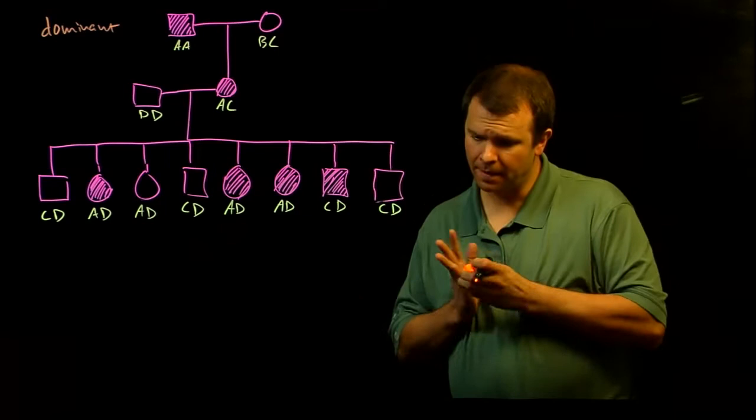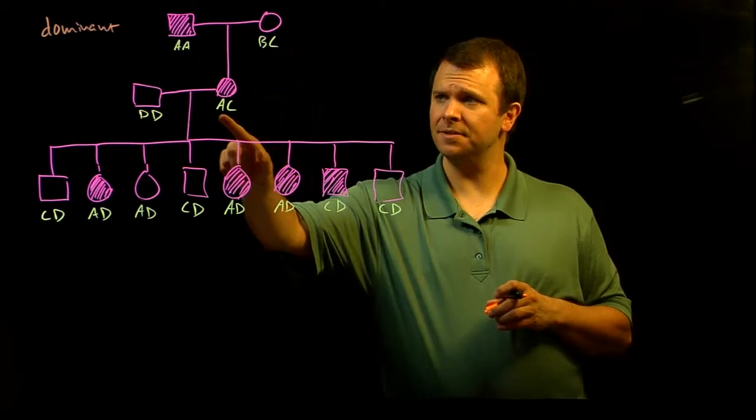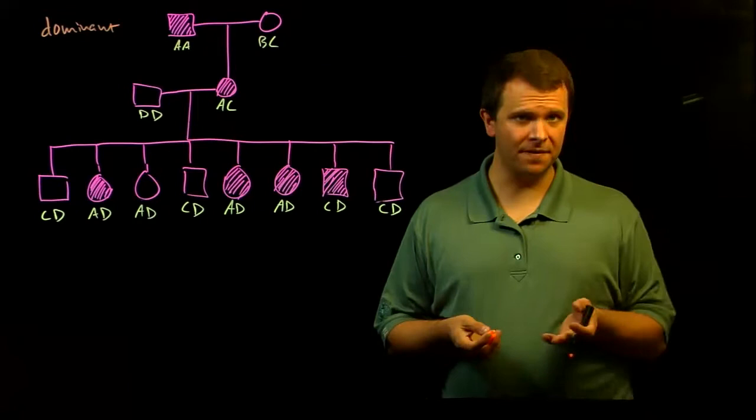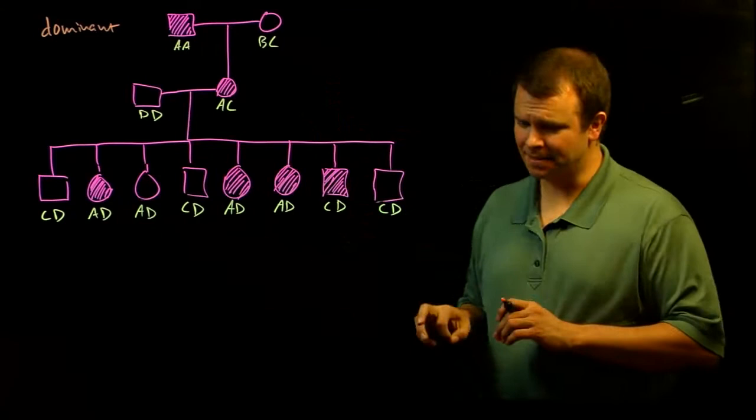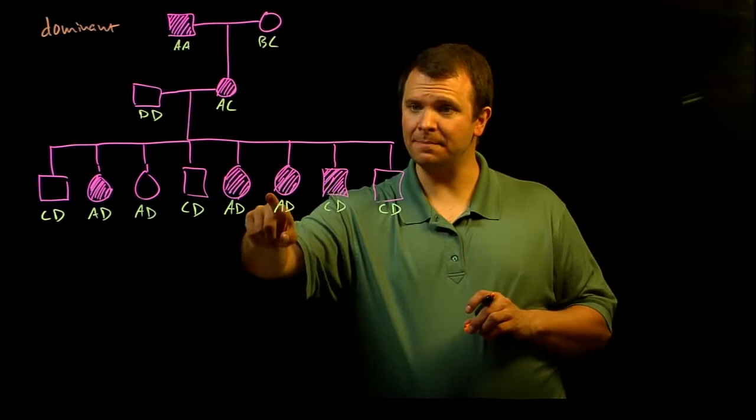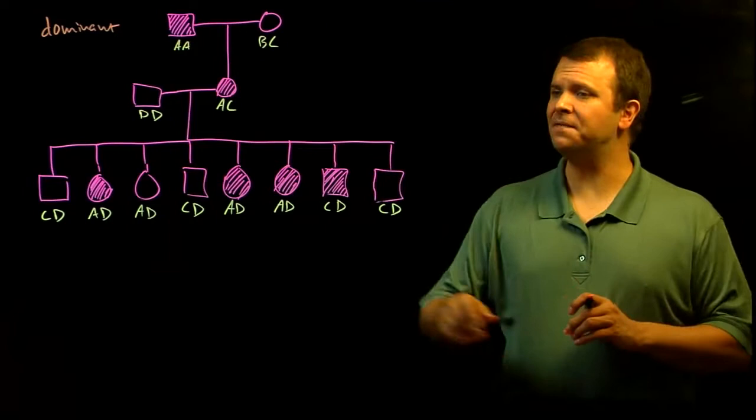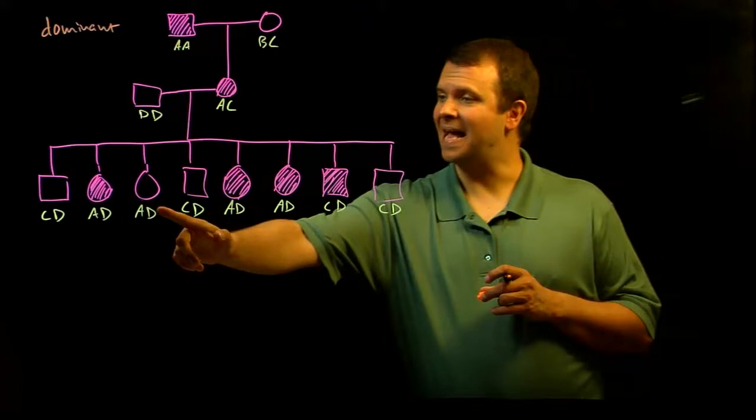I've also gone ahead and indicated the alleles for a particular polymorphism that seems to be linked to this disease. And as you look at this pedigree, you notice that this A allele seems to be linked quite often to the disease, though there are also individuals that have the disease that don't have the A allele, and there are individuals that have the A allele that don't show the disease, which means that this linkage is not perfect.